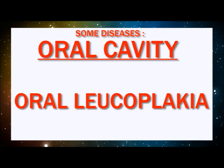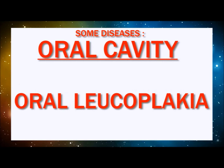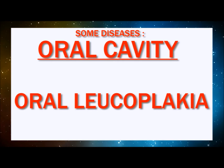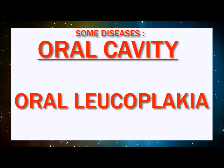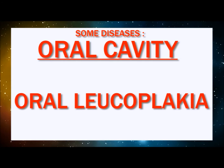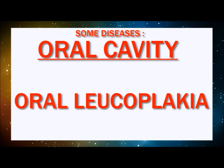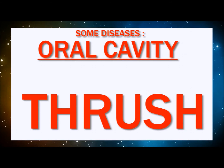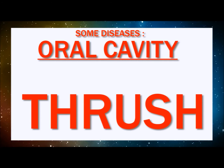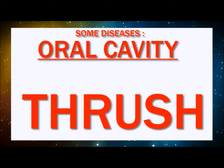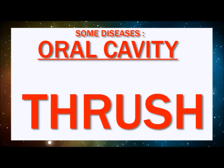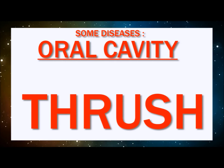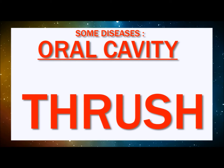Then we have oral leukoplakia — a white precancerous lesion that can occur anywhere in the mouth. Pre-cancerous means that if left untreated, it can become cancer. Then we have thrush, which is a yeast infection of the mouth, also characterized by white lesions. It looks like you ate cottage cheese and forgot to rinse your mouth out. It's commonly seen in people whose defenses are low.